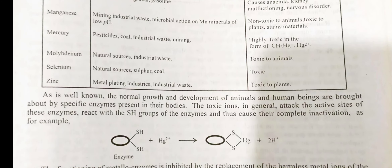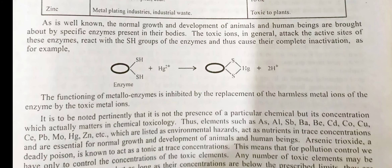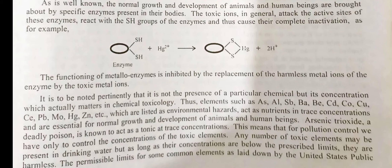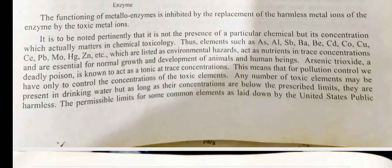Normal growth and development of animals and human beings is brought about by specific enzymes present in their bodies. Toxic ions generally attack the active sites of these enzymes, reacting with the SH group of the enzyme and thus causing their complete inactivation. The functioning of metal-enzymes is inhibited by the replacement of the harmless metal ion of the enzyme by the toxic metal ion. It is to be noted that it is not the presence of a particular chemical but its concentration which actually matters in chemical toxicology. Thus elements such as As, Al, Sb, Ba, Be, Cd, Co, Cu etc., which are listed as environmental hazards, act as nutrients in trace concentrations and are essential for normal growth and development of animals and human beings. Arsenic trioxide, a deadly poison, is known to act as a tonic at trace concentrations.